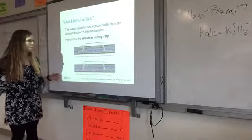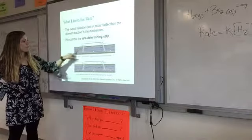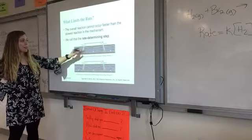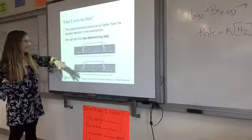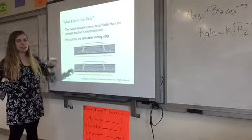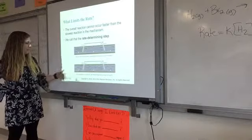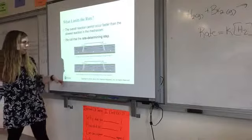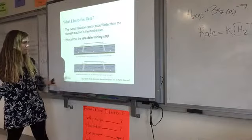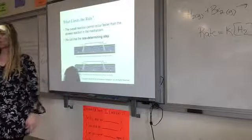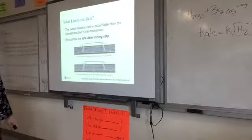They're using an example of toll plazas. If toll plaza A is backed up, but toll plaza B is smooth sailing, then toll plaza A is your rate determining step because that is going to slow you down. In this other example, you can see that A is moving a little bit more smoothly, but it's B that's backed up. So B will be your rate determining step.